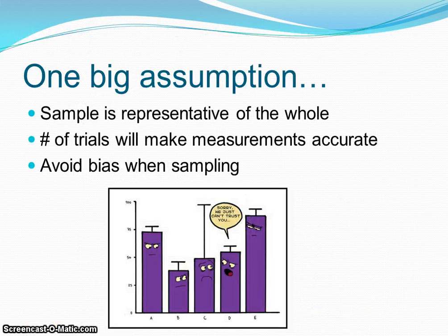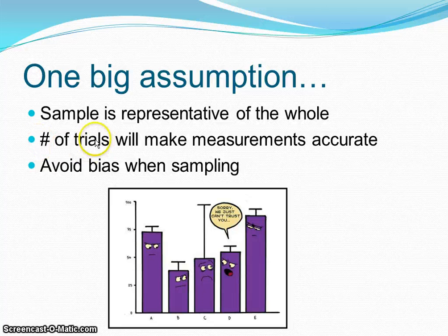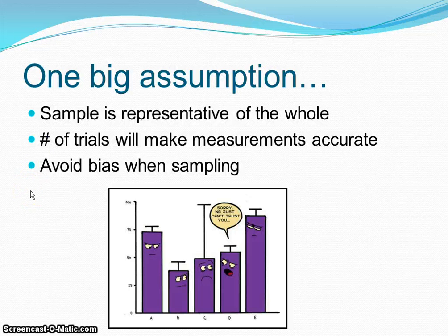But when we do this, we have to make some assumptions, because samples are just representations — they're not the entire thing. We also have to plan accordingly and make a large number of trials so that our data is more precise and more accurate. And we have to, as best as possible, avoid bias when we're sampling. Where we pick our samples, we have to do that randomly.